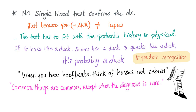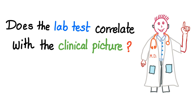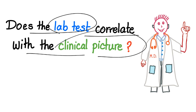The golden rule in rheumatology is that no single blood test whatsoever can confirm the diagnosis. Always ask yourself: does the lab test correlate with the clinical picture? Now you're starting to learn — now you're becoming a good doctor.